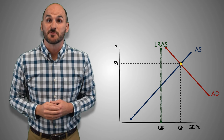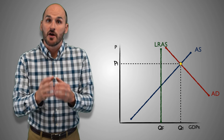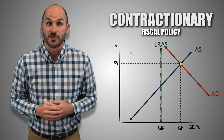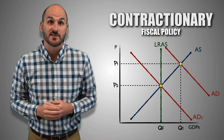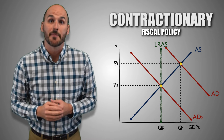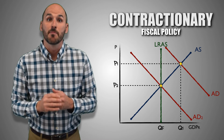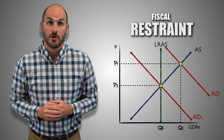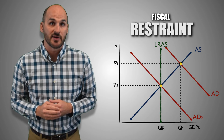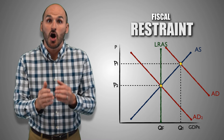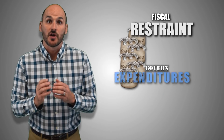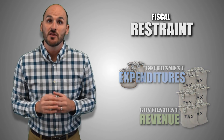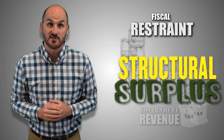When the economy is experiencing an inflationary gap, government implements contractionary fiscal policy by decreasing its expenditures, increasing personal income taxes, or using a combination of both. In the budget, these policy options are known as fiscal restraint. While these policies may decrease aggregate demand and cause economic contraction, the government is spending less and taking in more revenue, causing the federal budget to move toward a surplus.